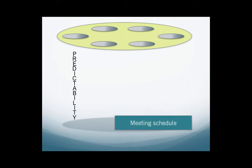Finally, predictability includes a consistent schedule for meetings held across the year that details when and where current and future meetings will be held.